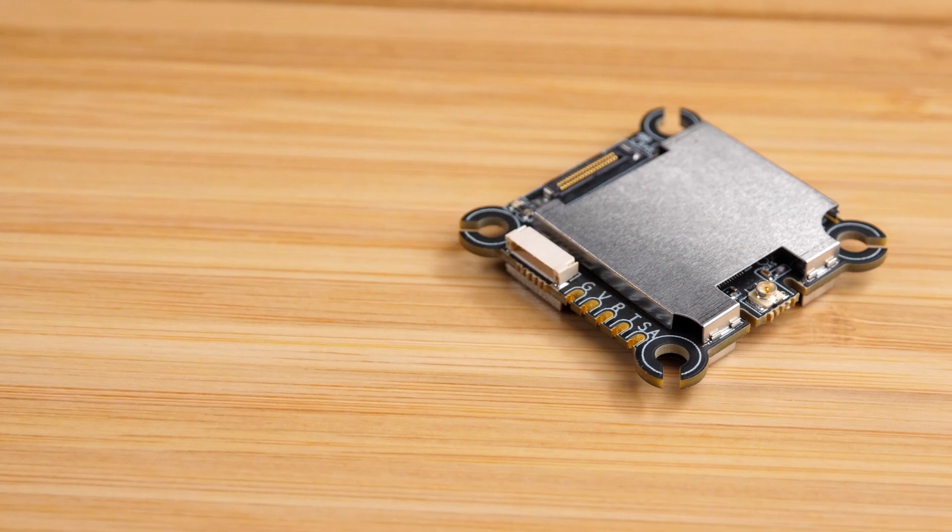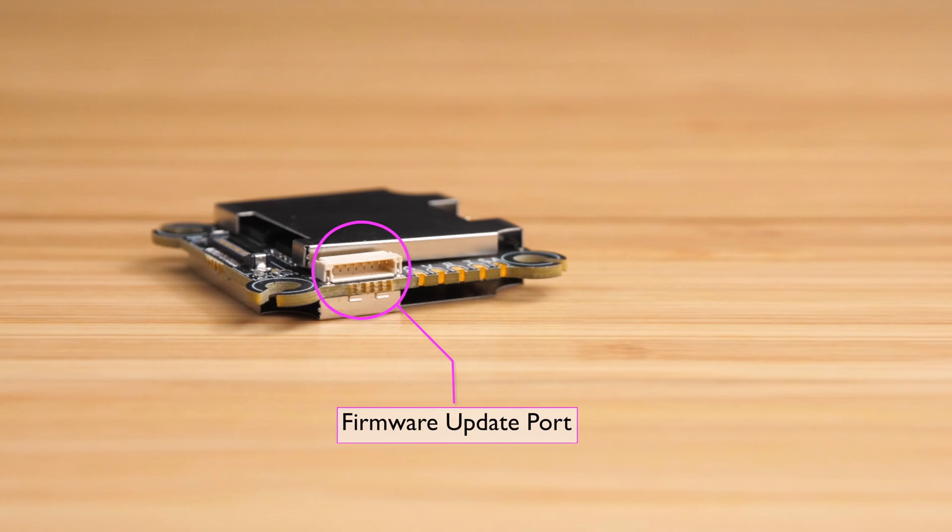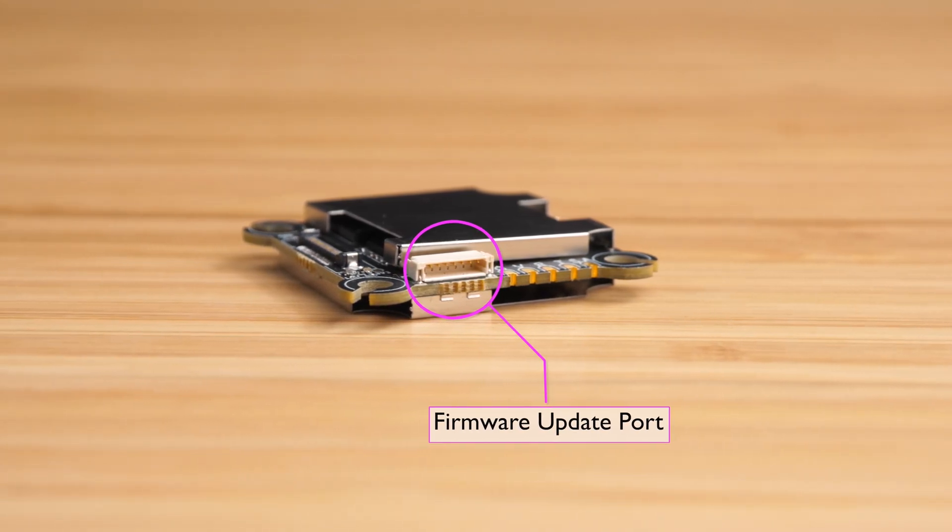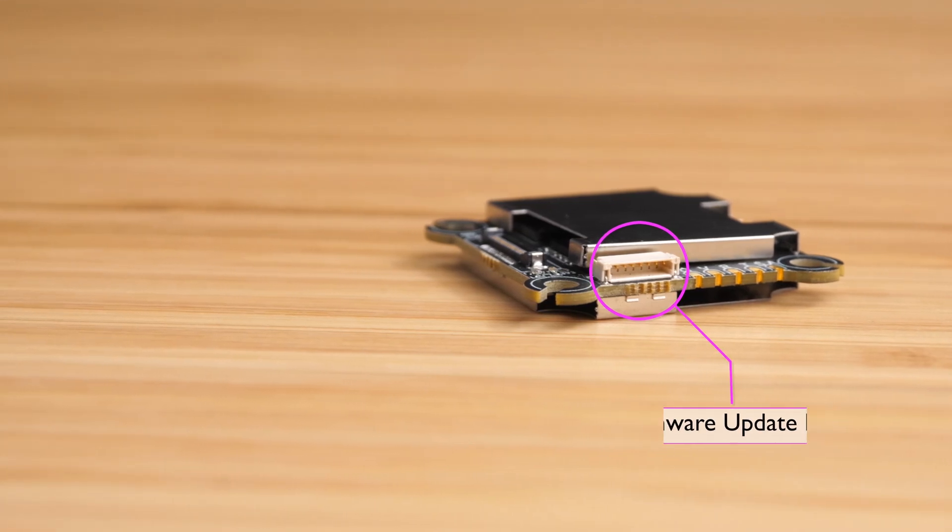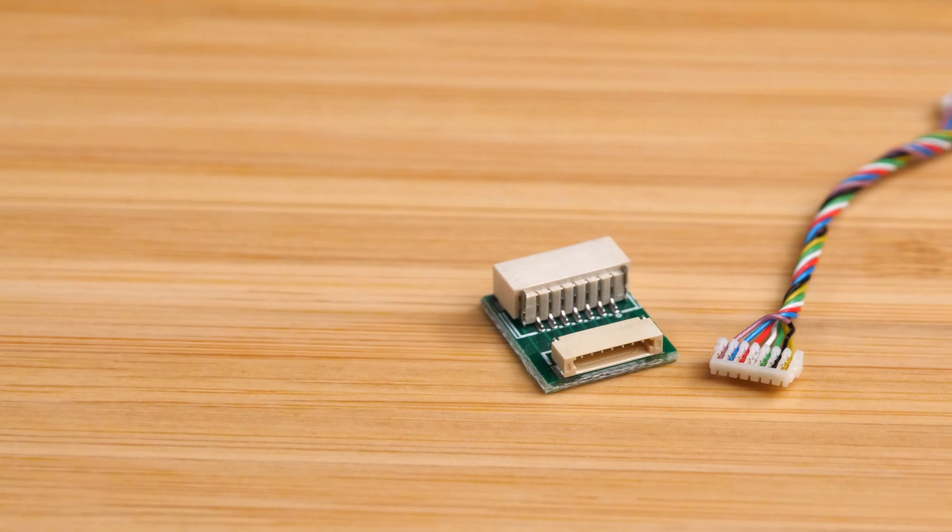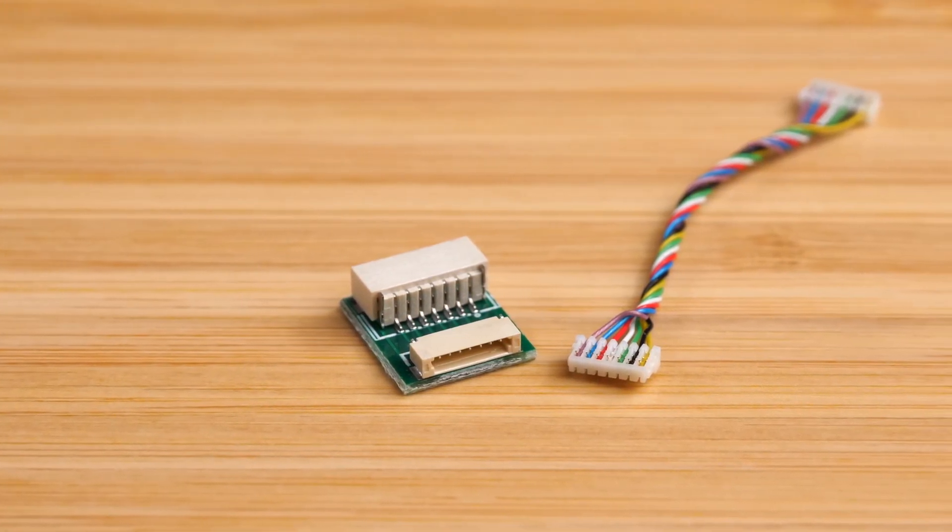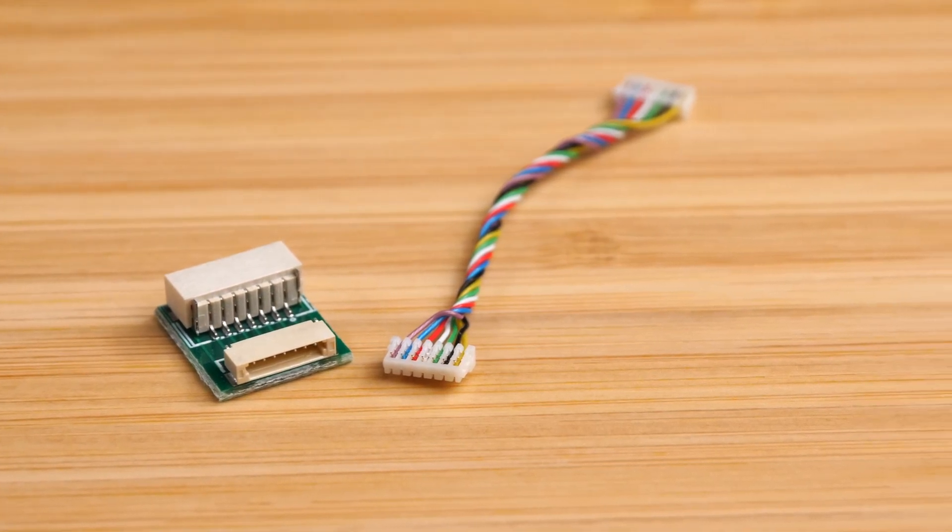Now let's look at the other connections on the VTX. First up is the firmware update port and you'll notice that this one looks a little bit different than the HD0 firmware update ports you've seen before. This one is a bit smaller. You aren't going to be able to plug a standard HD0 firmware update cable into it so they've included a cable with a smaller connector and this little adapter board that lets you plug a normal firmware update cable into it.